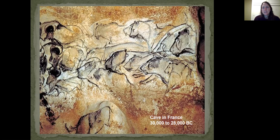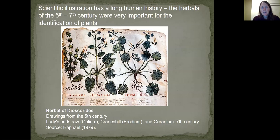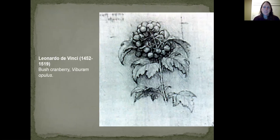So we've been making marks on the world for a really long time. It wasn't until the invention of paper and then the development of some of our printing abilities that we were able to really capture images more easily. These are some of the first botanical illustrations from the fifth to seventh century in herbals from Europe that were capturing medicinal plants. But you can see they're kind of flat — the plants look like they've been squashed, probably drawn from pressed plants. Here's a picture from Leonardo da Vinci of a bush cranberry, showing better perspective and depth from the 1450s to 1500s.